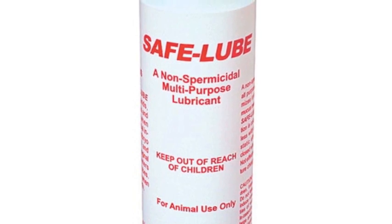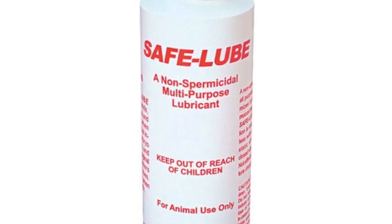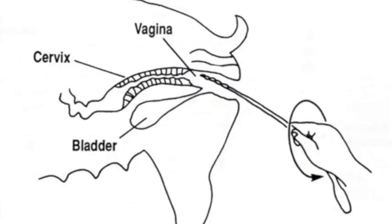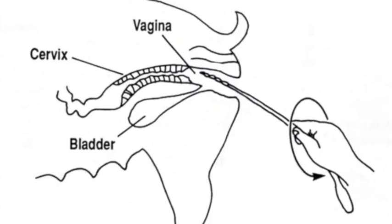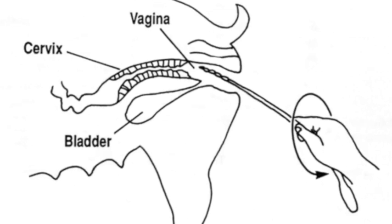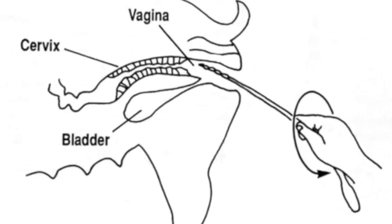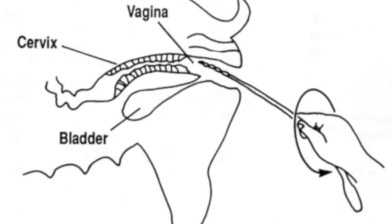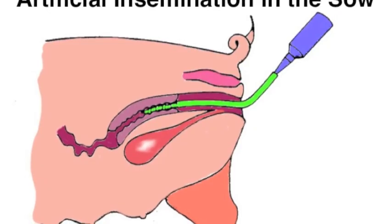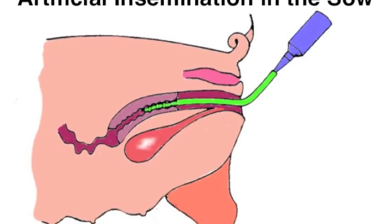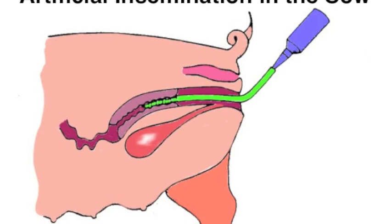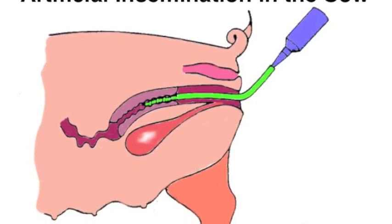Before you insert the rod, you want to make sure you lubricate it well so it will not hurt the sow. If you are using a corkscrew catheter, you want to make sure that while you insert the rod you are twisting it as if it were a screw. Also, you want it at an upward angle to avoid the bladder. After about 10 inches, you want to see if you have entered the cervix.